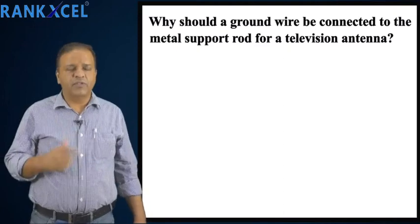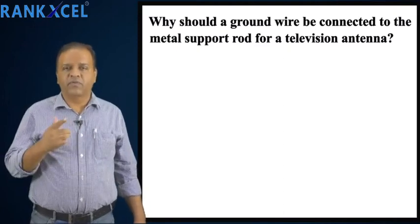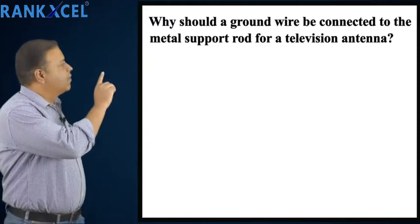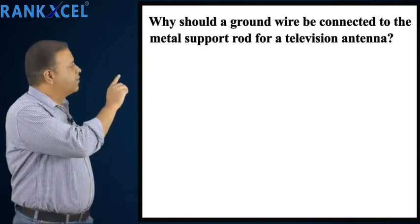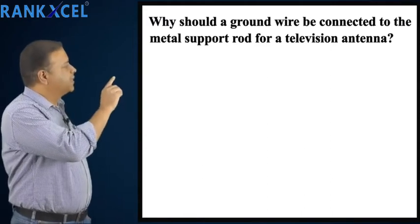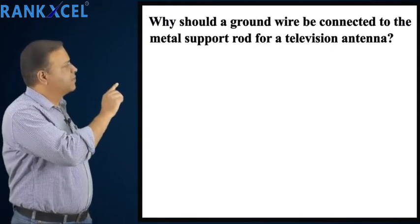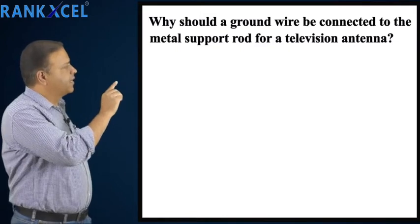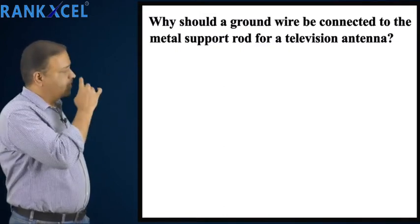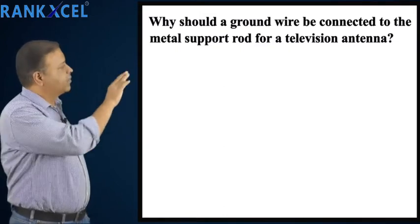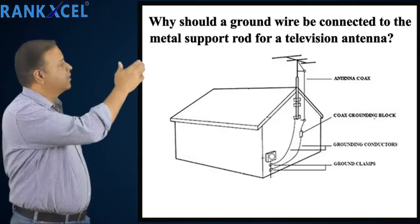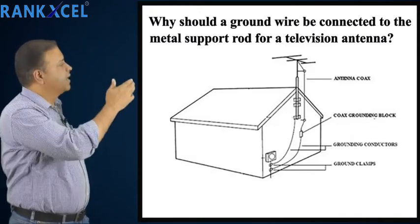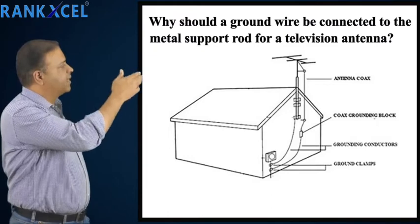Hello students, let's solve this problem related to flow of charges. The problem goes like this: why should a ground wire be connected to the metal support rod for a television antenna? To understand this clearly, just look at the diagram shown over there. On the top of the house there is a television antenna, and that has been connected to the ground through a wire.